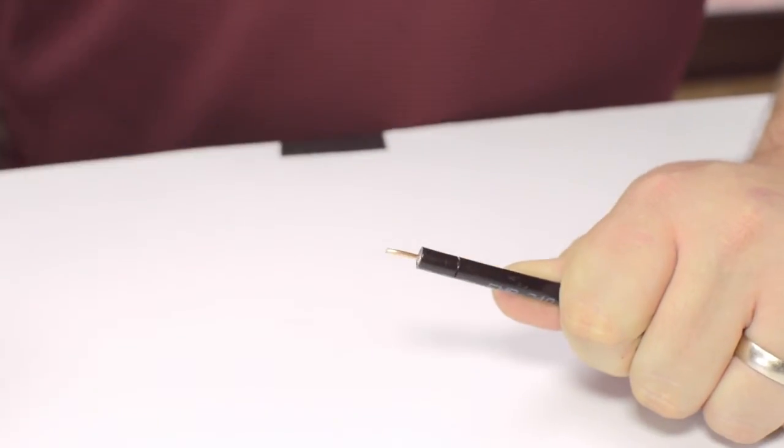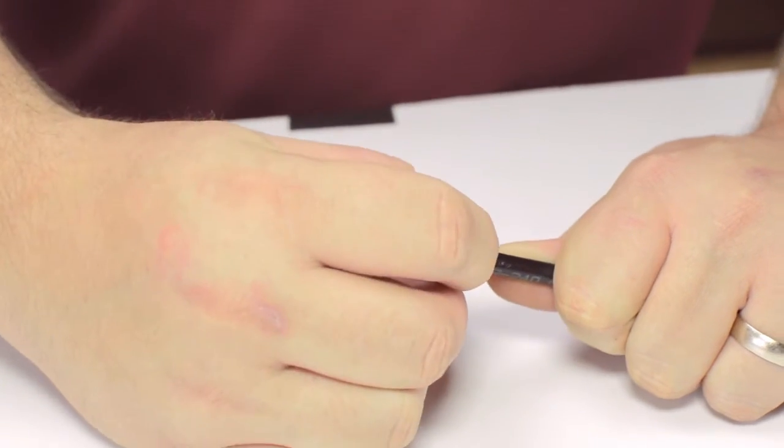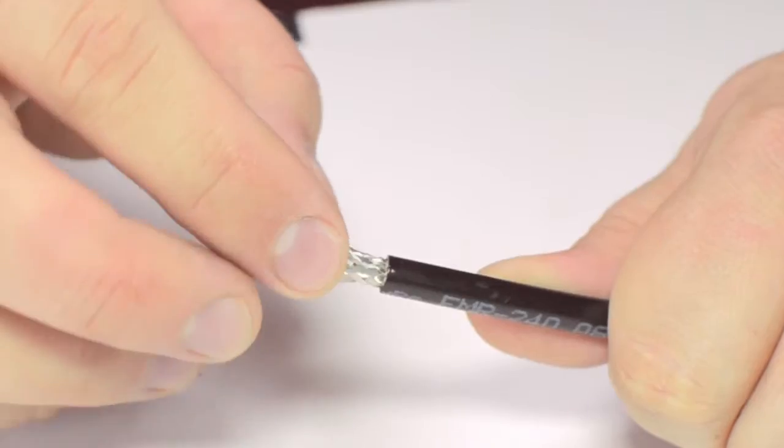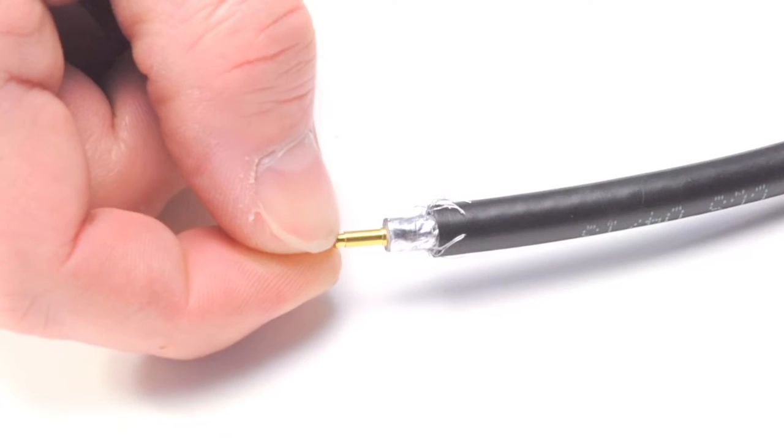The advantage of using a cable stripper is that it will strip back the jacket and dielectric at the same time. Pull back the braided shield and insert the pin onto the center conductor.